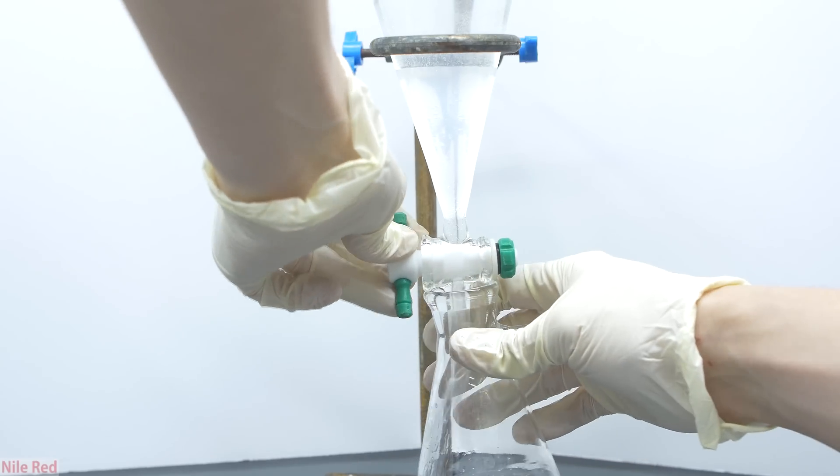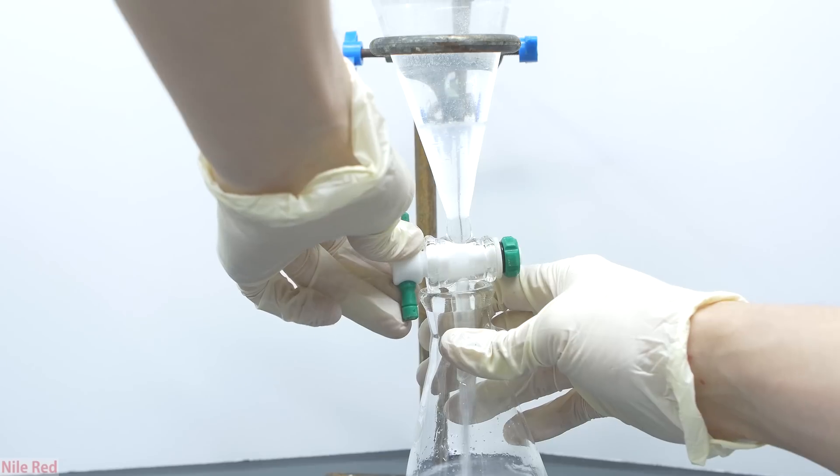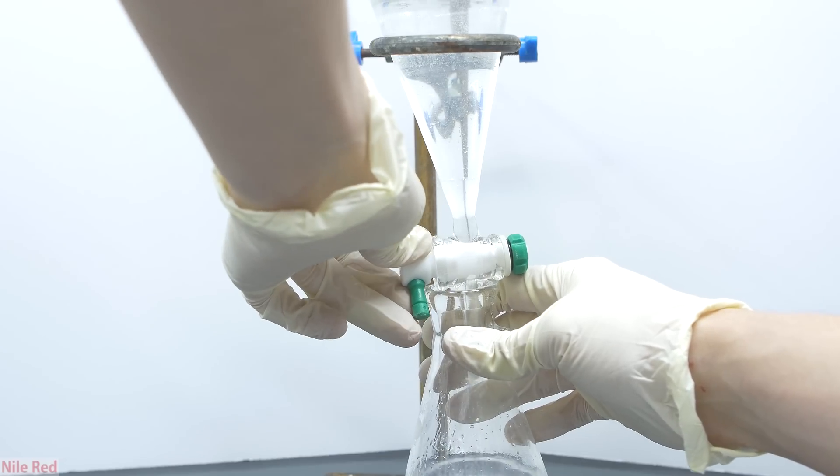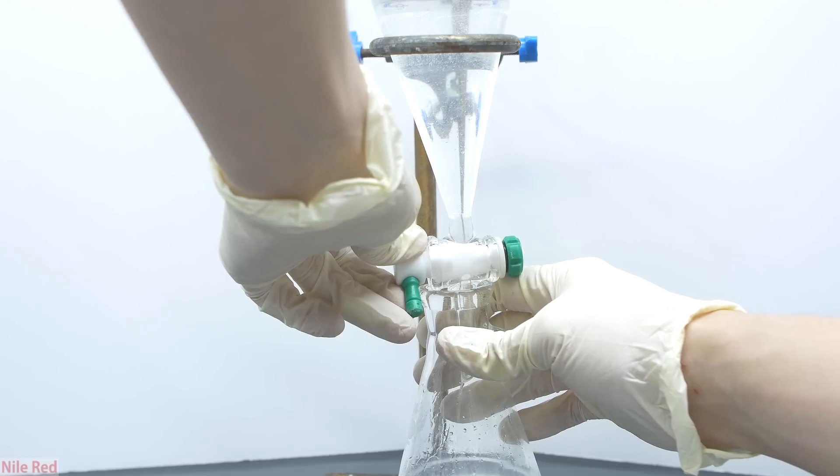Methyl iodide is much more dense than water and more dense than saturated sodium chloride solution, so it's the bottom layer and this is the one we want to collect and retain.